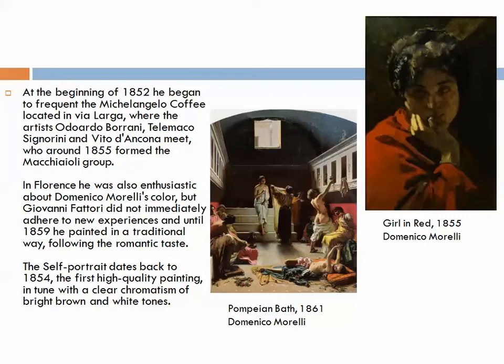He was also enthusiastic about Morelli's colour, which he encountered in Florence. But Fattori did not immediately adopt these new experiences; until around 1859 he still painted in a traditional way but followed the more romantic taste. I've included two paintings by Morelli to show the inspiration of colour and romance. The Pompeian Baths has a really strong sensation of neoclassicism, while The Girl in Red, just a few years apart, has a very romantic, theatrical but also quite impressionistic sensation.